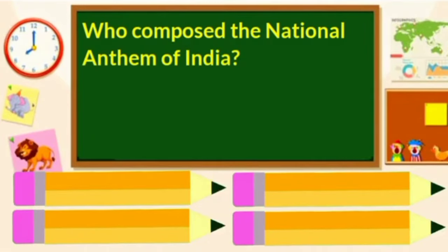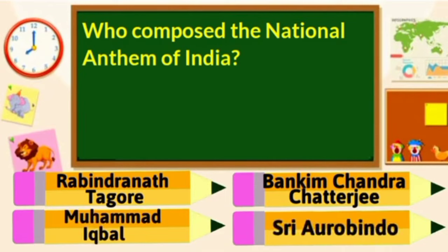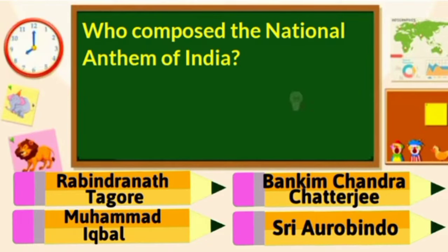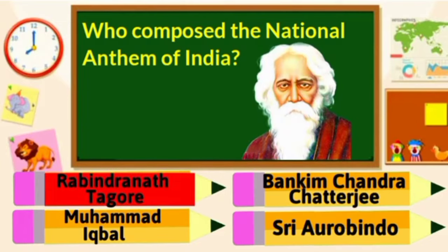Who composed the National Anthem of India? Rabindranath Tagore, Bankim Chandra Chatterjee, Muhammad Iqbal or Sri Aurobindo? Our National Anthem was composed by Nobel Poet and Laureate Rabindranath Tagore.